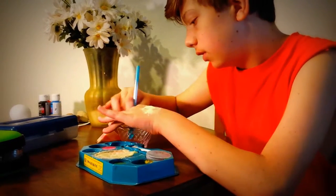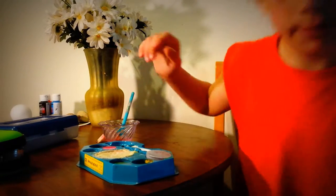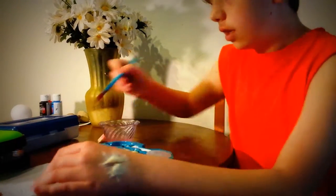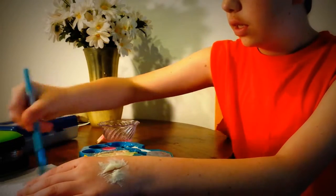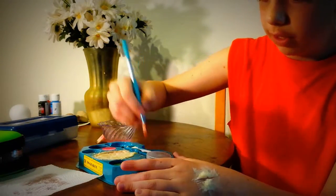So what we do is get our sponge, kind of dry it, get a tiny bit of black. Here, I'll just do it close up. So you're going to put a little bit of black in there.